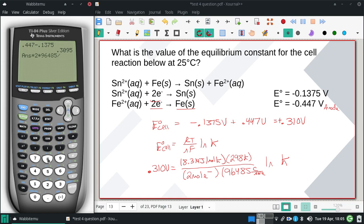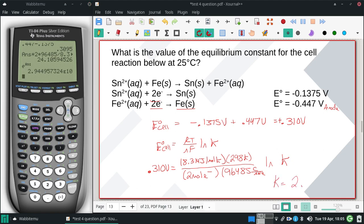Divide it by the R and by 298. And that should be equal to the natural log of K. So I will invert natural log of that value. And I end up with a K of 2.9 times 10 to the 10th.